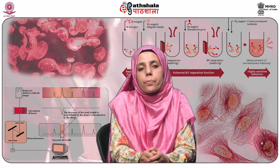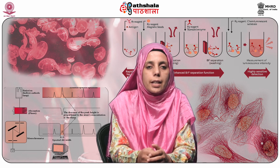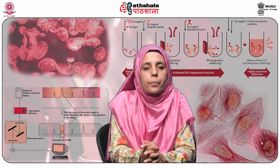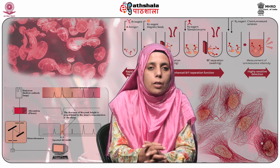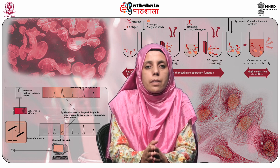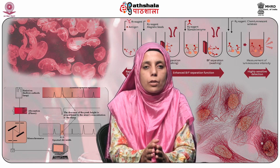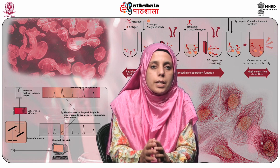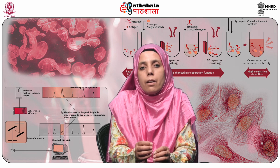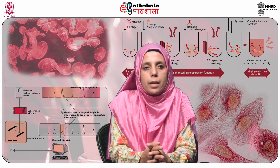Fluorescence differs from phosphorescence in that the electronic energy transition responsible for fluorescence does not involve a change in electron spin. In other words, the electron spin remains unchanged when a molecule shows fluorescence, in comparison to phosphorescence. Therefore, fluorescence is very short-lived and ceases immediately when the illuminating light is cut off — it is roughly 10 to the power minus 5 seconds.